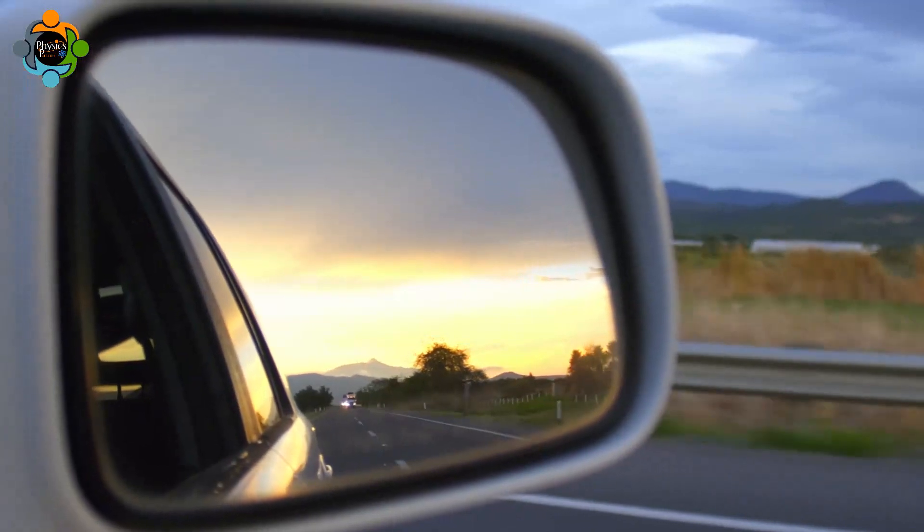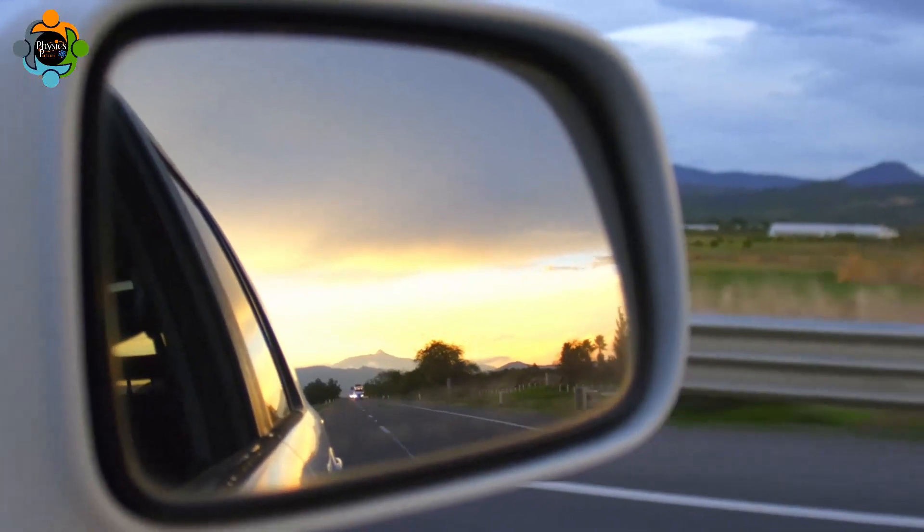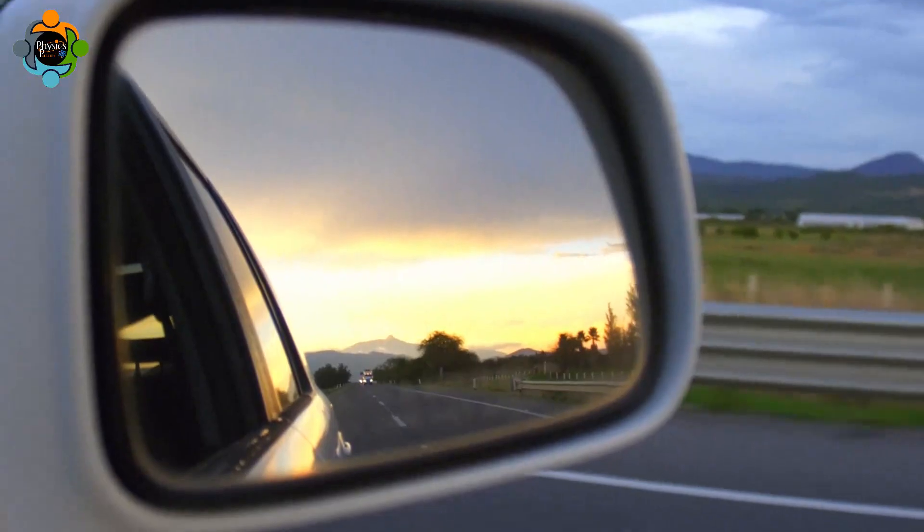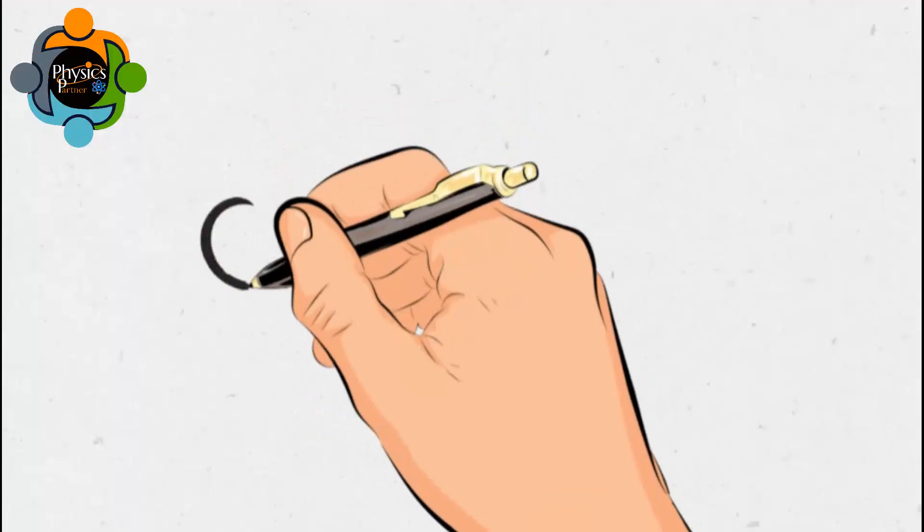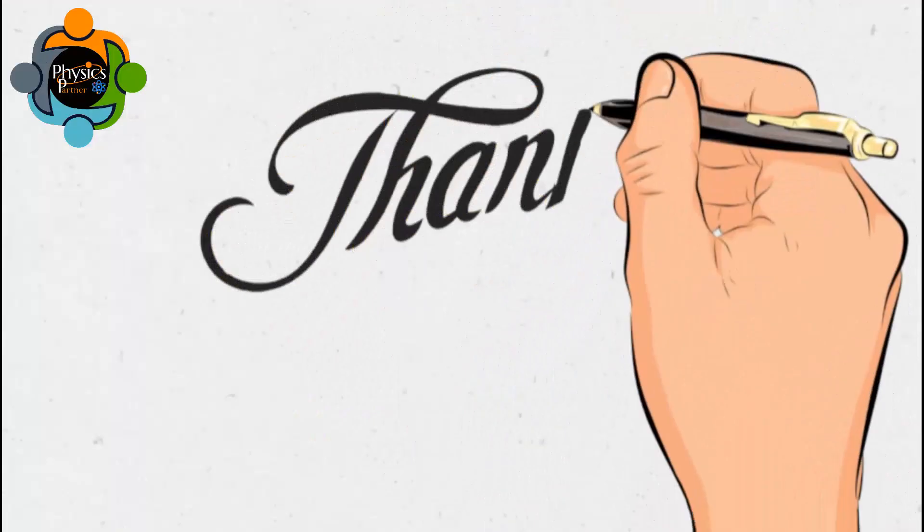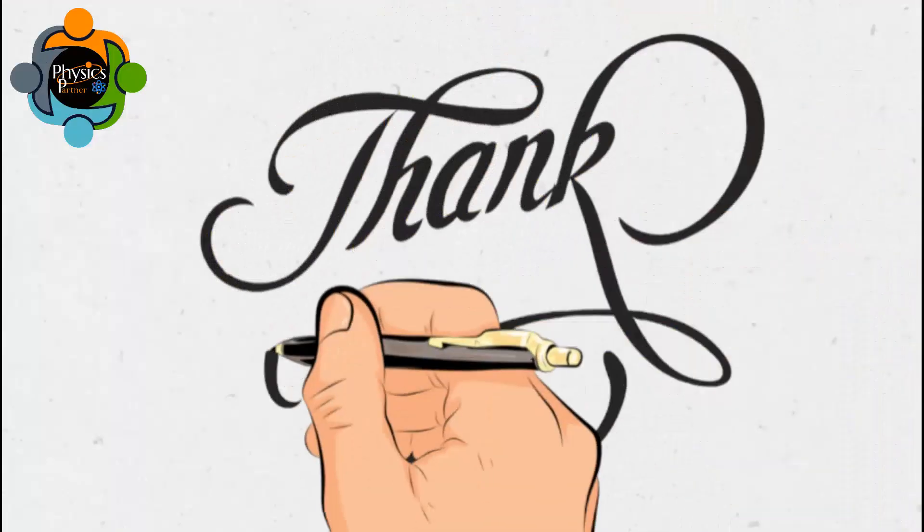Convex mirrors are commonly used as side view or rear view mirrors in vehicles because the outward curve provides a much wider area of view, which is crucial for safety on the road. So I think that's enough for today.